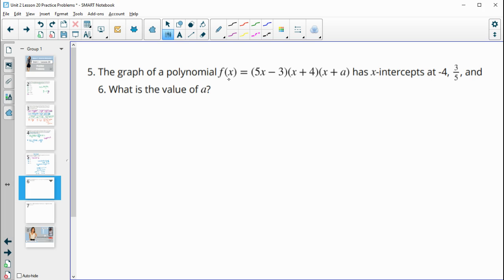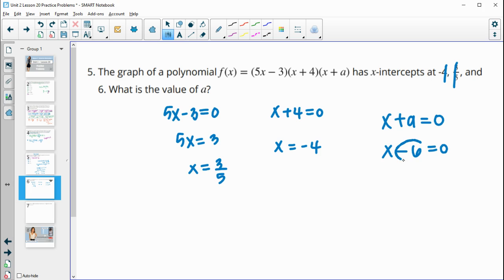Number five, the graph of the polynomial F of X has these X intercepts at negative four, positive three fifths, and six. So what's the value of a? Remember X intercepts are where each of these are equal to zero, where each of the factors equals zero. So we add three to both sides here, divide by five, and we get that positive three fifths factor. So this one's taken care of for the X plus four equals zero. We would subtract four from both sides and we get negative four as an X intercept. So that means that this one right here, X plus a equals zero, needs to give us positive six. In order to bring this over for it to be positive six, this would have to be minus six. So then a would be negative six.